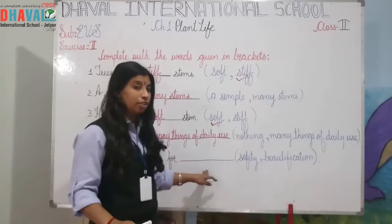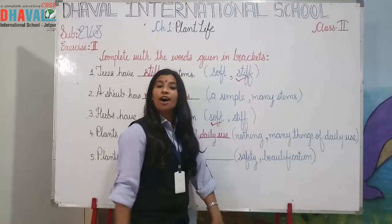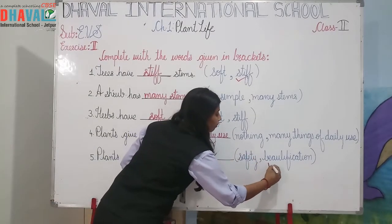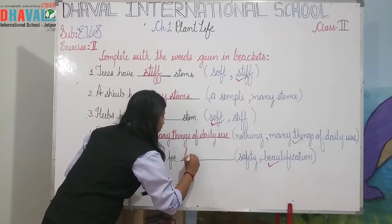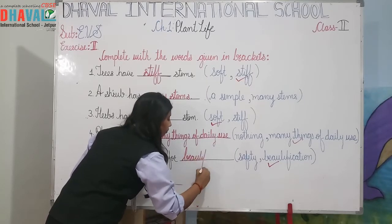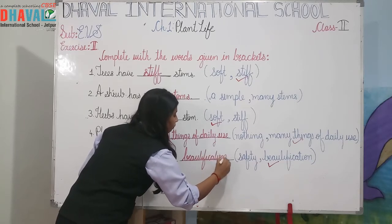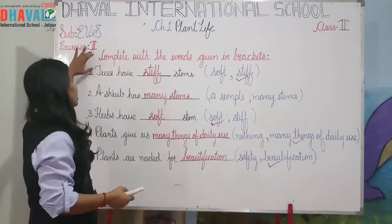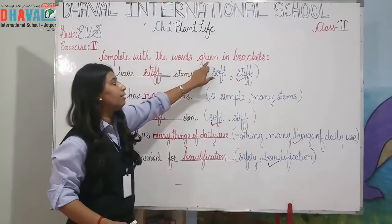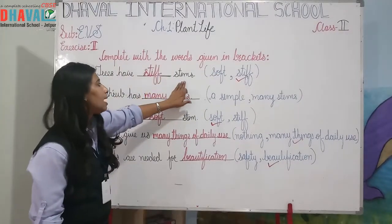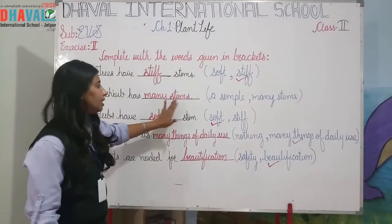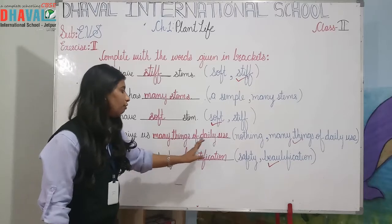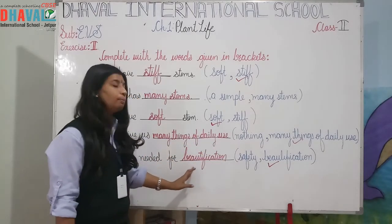Fifth one: plants are needed for dash — safety or purification? Obviously, to beautify our house, plants are needed for purification. So the answers for exercise 2 are: trees have stiff stems; a shrub has many stems; hops have soft stems; plants give us many things of daily use; plants are needed for purification.